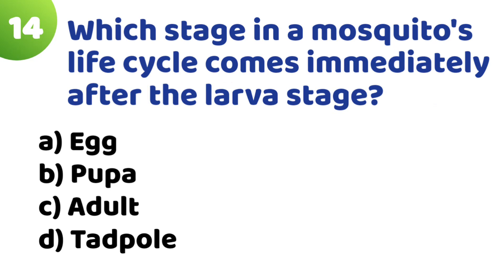Question 15: Which stage in the mosquito life cycle comes immediately after the larva stage? Option A: Egg. Option B: Pupa. Option C: Adult. Option D: Tadpole. The correct answer is Option B — Pupa.